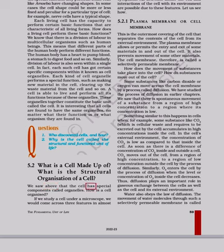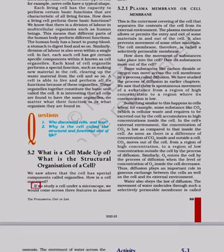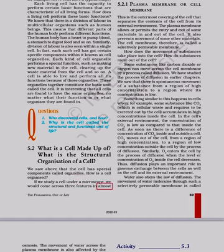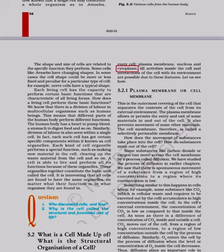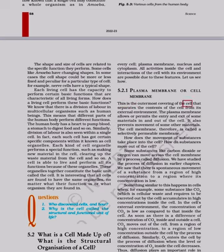5.2 What is a cell made up of? What is the structural organization of a cell? We saw that the cell has special components called organelles. If we study a cell under a microscope, we would come across three features in almost every cell: plasma membrane, nucleus and cytoplasm. All activities inside the cell and interactions of the cell with its environment are possible due to these features. 5.2.1 Plasma membrane or cell membrane: This is the outermost covering of the cell that separates the contents of the cell from its external environment. The plasma membrane allows or permits the entry and exit of some materials in and out of the cell. It also prevents movement of some other materials. The cell membrane, therefore, is called a selectively permeable membrane.